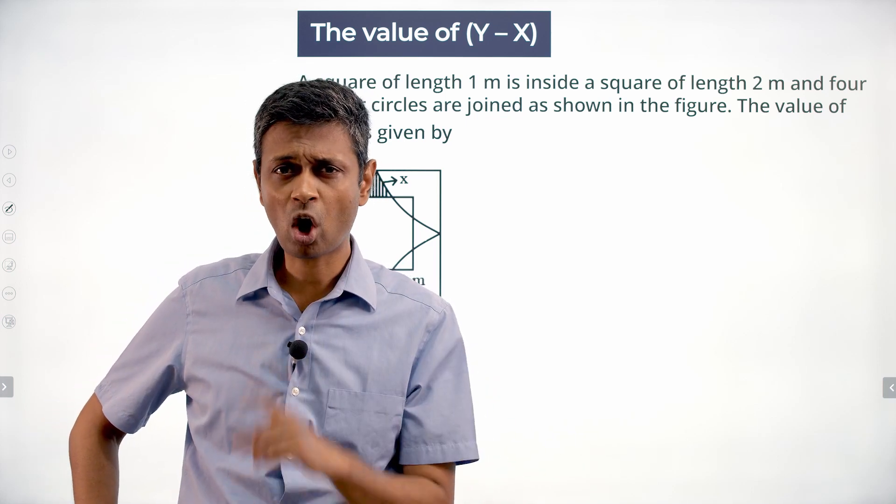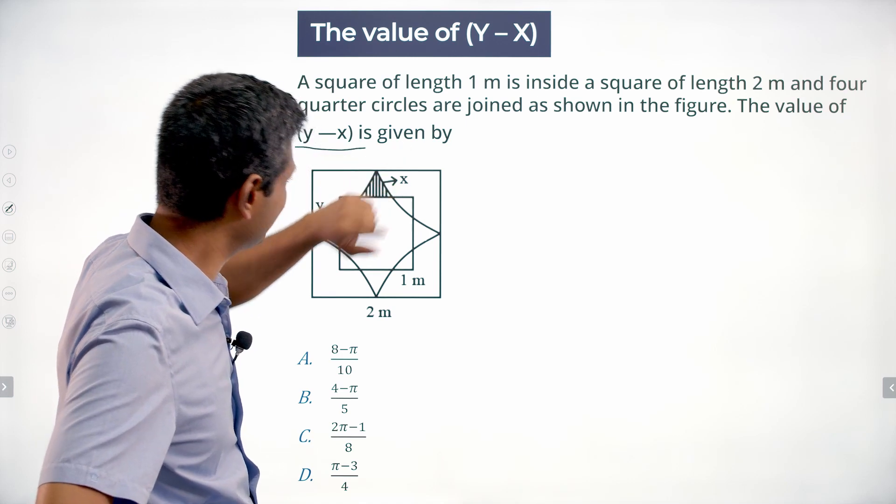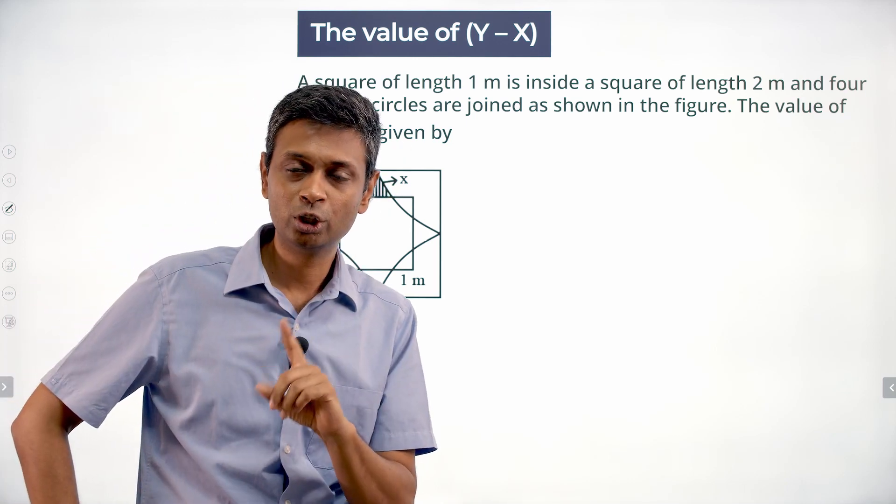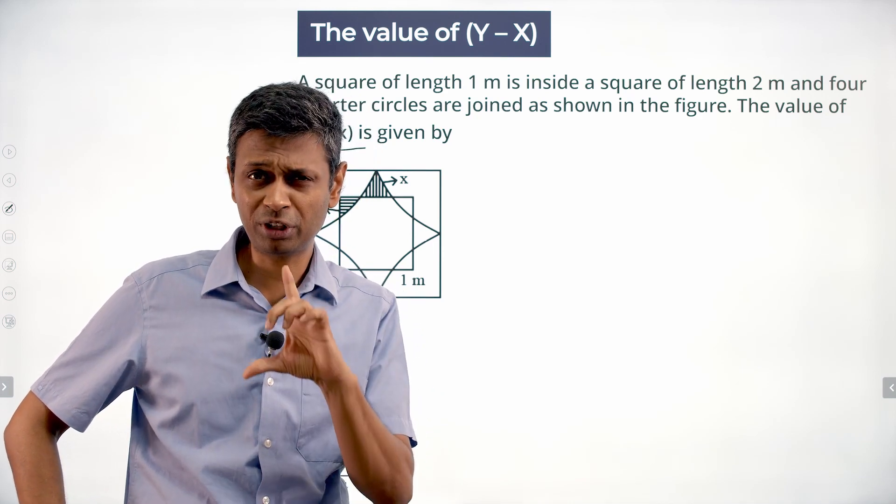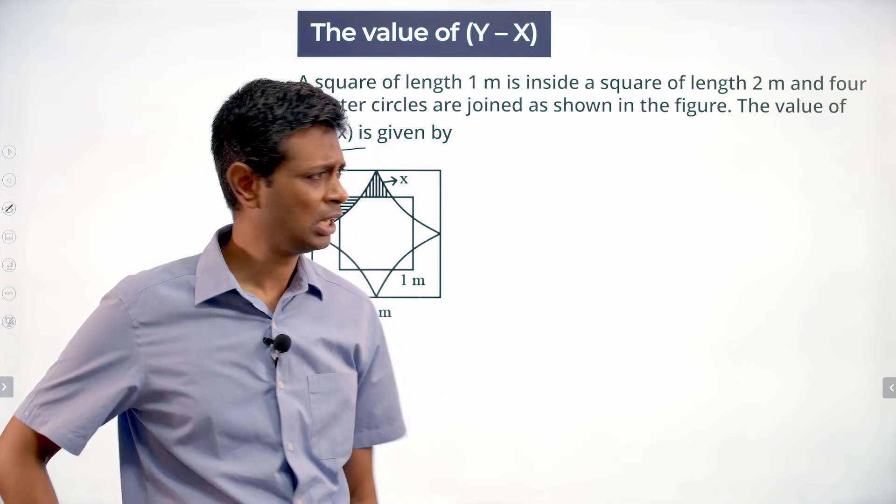I suspended that and said look, they've not asked us for y or x, they've asked us for y minus x. That's a breakthrough - you can get to y minus x without getting y and x individually if you reframe the equation. We are through.